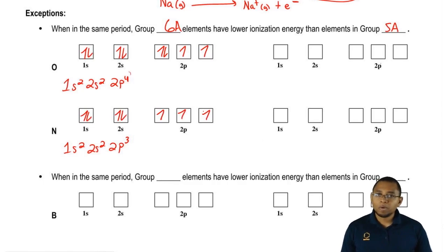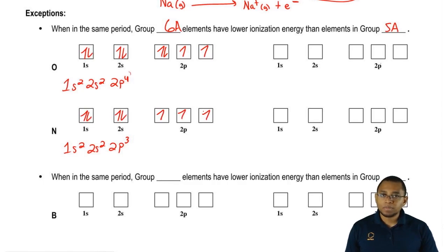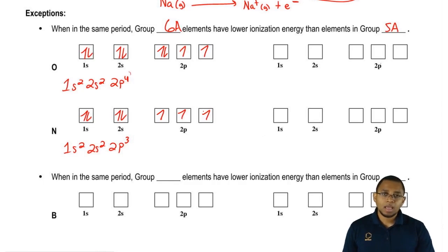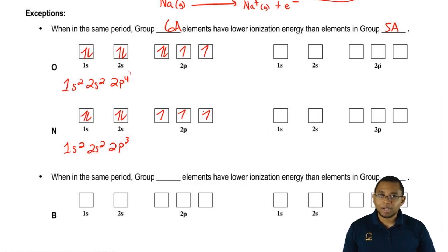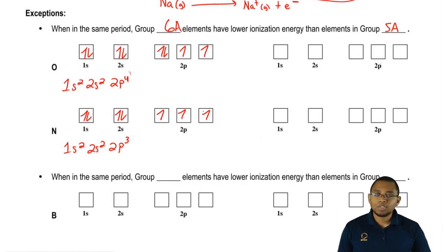This is the way we fill it in following the Aufbau principle, where we go from 1s to 2s to 2p. When we get to 2p, those electrons are degenerate — they have the same energy — so we half-fill them first using Hund's rule.